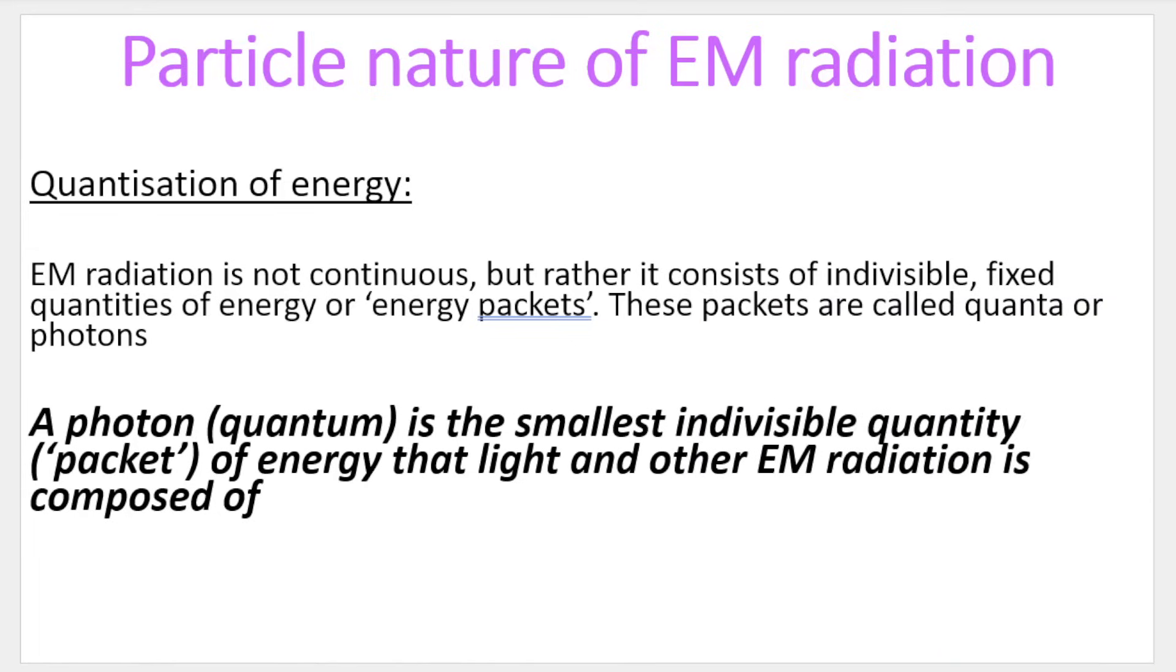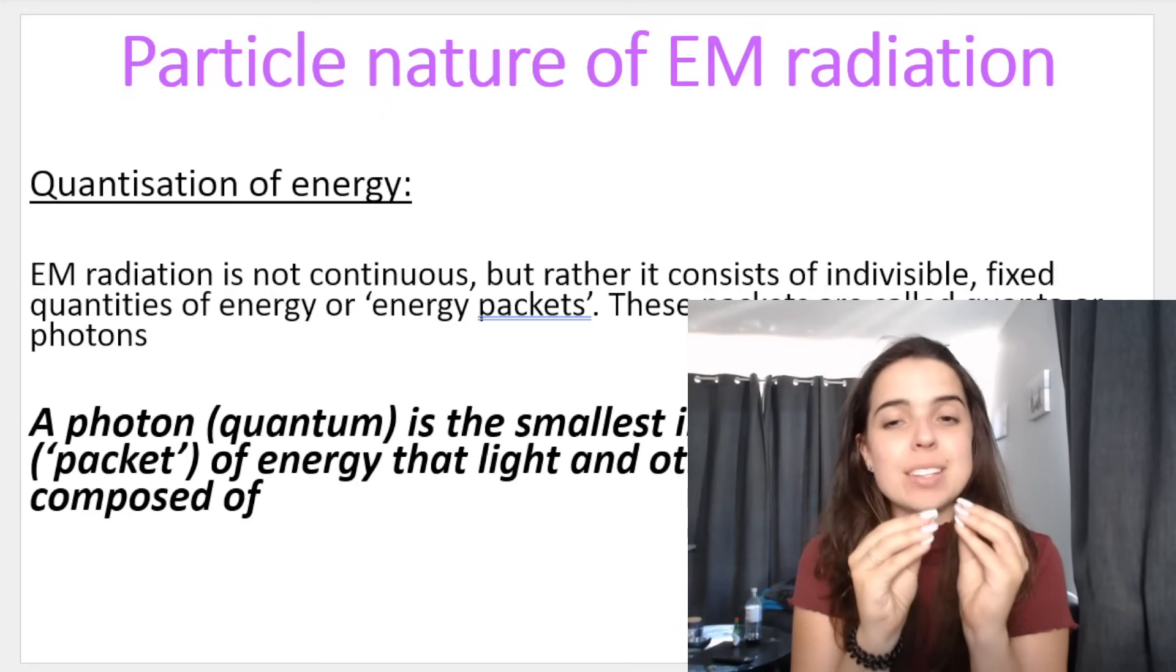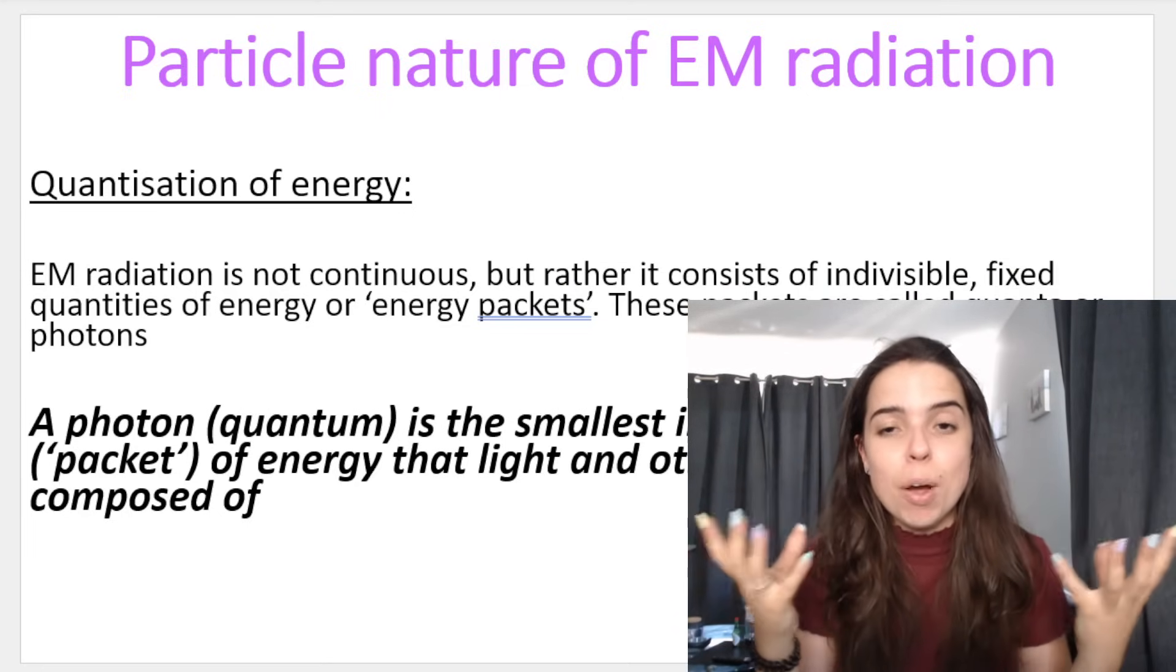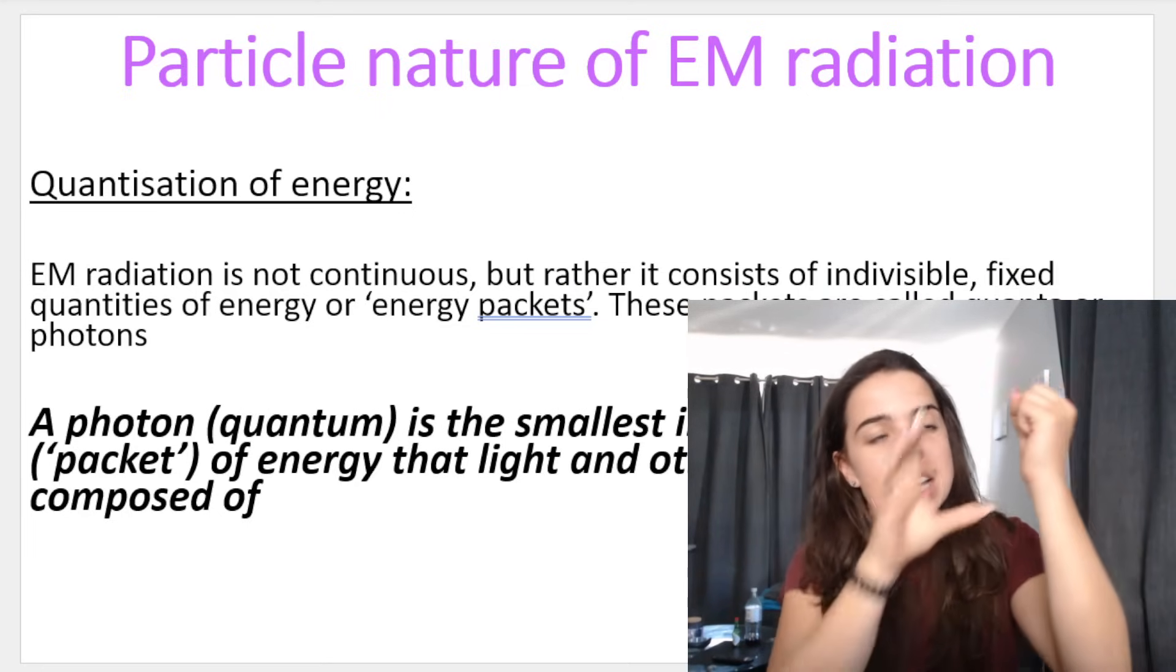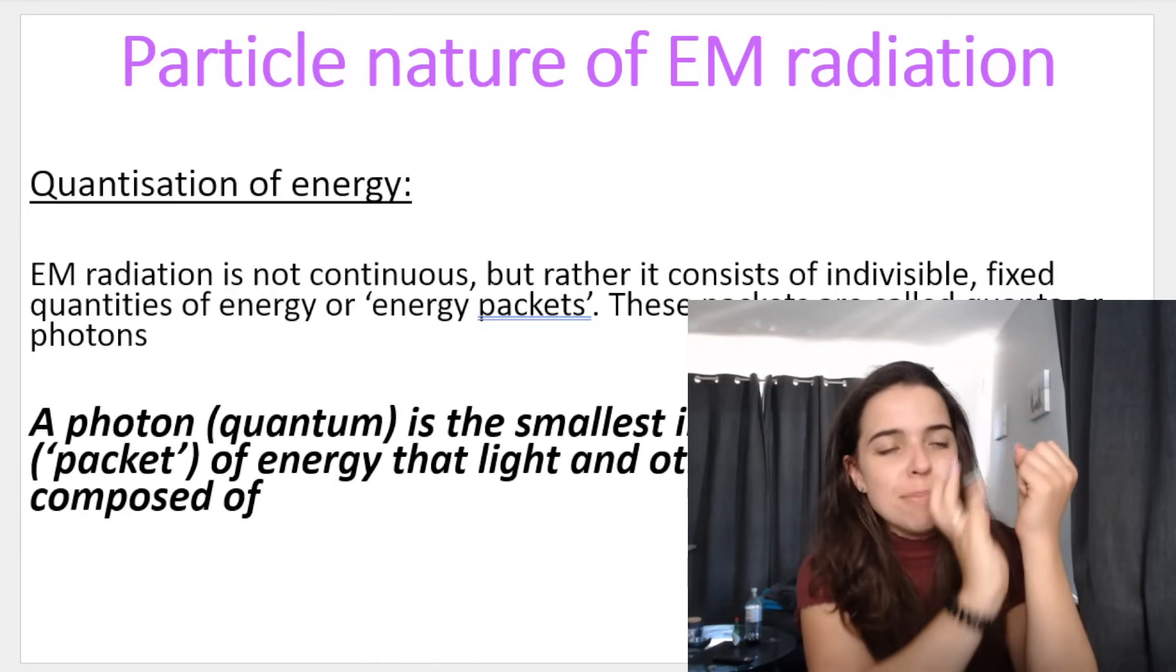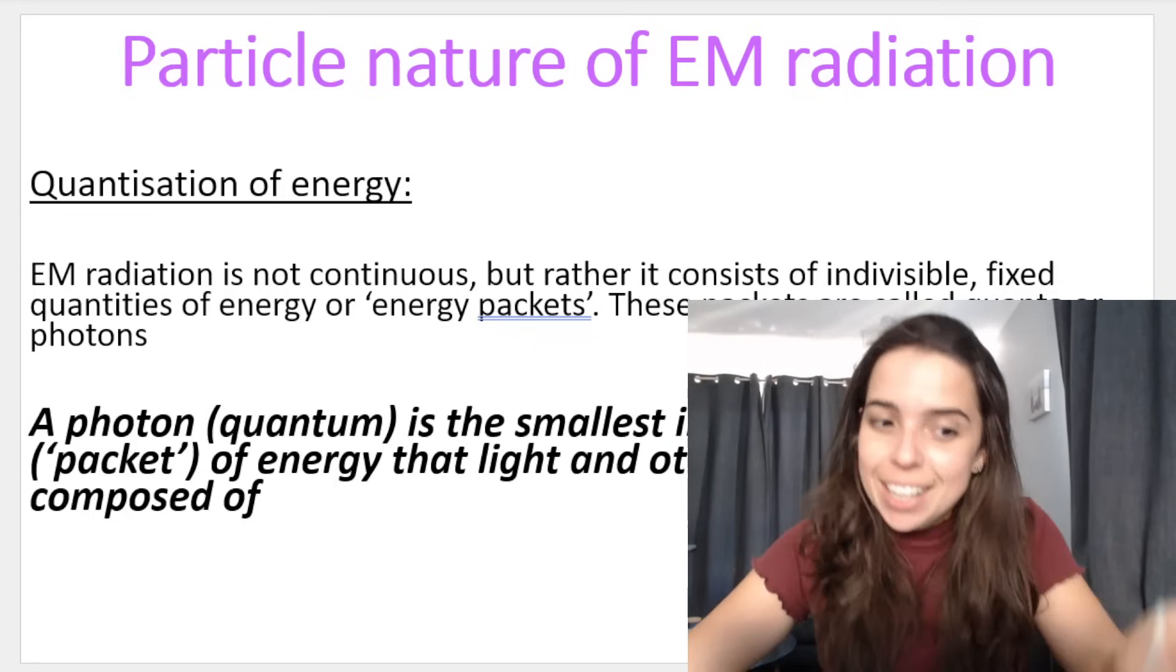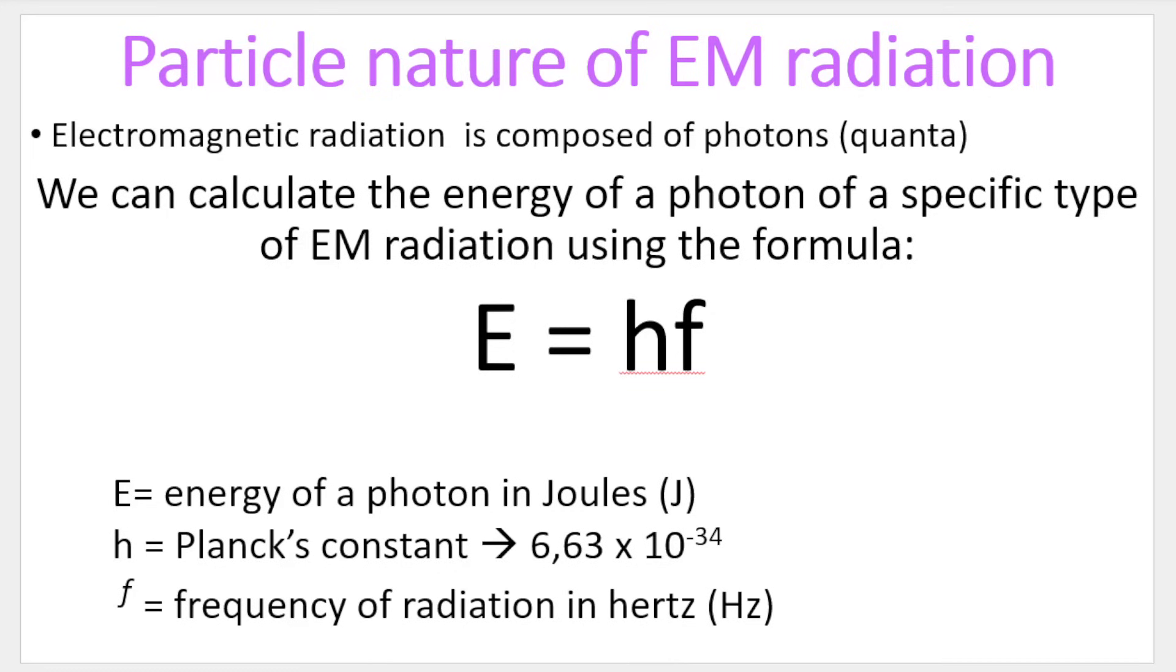So, a photon or a quantum is the smallest indivisible quantity. It's a packet of energy that light and other electromagnetic radiation is composed of. So, it's the smallest indivisible little packets of energy that light is composed of. So, if I shine a beam of light and you can see that light beam, that is actually composed of thousands, millions of photons. Those are little packets of energy that are contained in light. And, we can calculate the energy of those photons using a very particular formula.